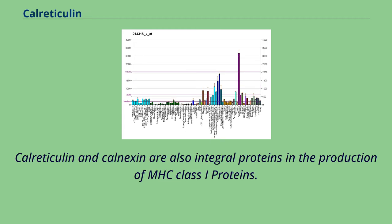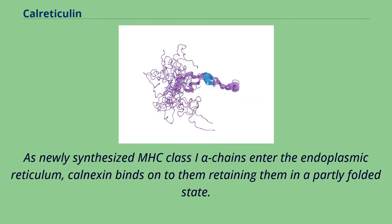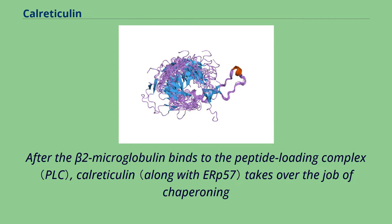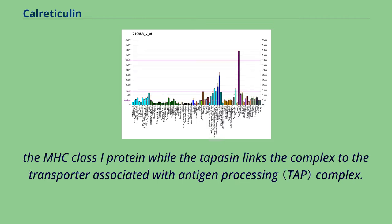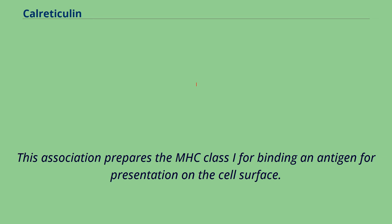Calreticulin and calnexin are also integral proteins in the production of MHC class I proteins. As newly synthesized MHC class I alpha chains enter the endoplasmic reticulum, calnexin binds onto them, retaining them in a partly folded state. After the beta-2-microglobulin binds to the peptide loading complex, calreticulin takes over the job of chaperoning the MHC class I protein, while tapasin links the complex to the transporter associated with antigen processing complex. This association prepares the MHC class I for binding an antigen for presentation on the cell surface.